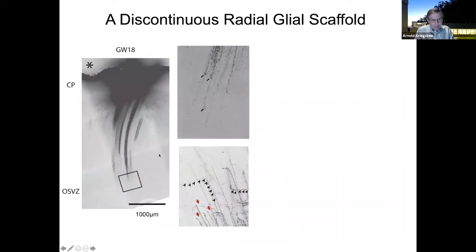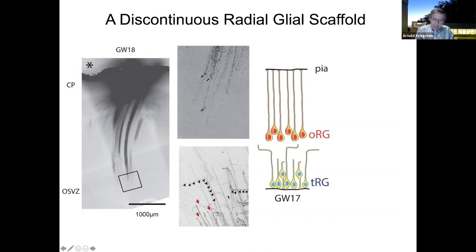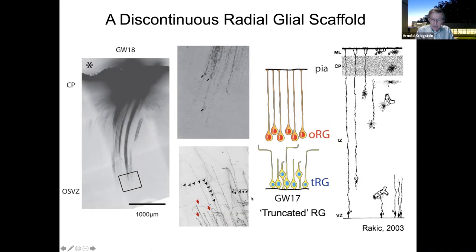In early stages the radial glia at the ventricle ran continuously up to the cortex, forming a continuous scaffold. But after a week or two — at gestational weeks 15 to 18 when lower cortical layers form and upper cortical neurogenesis begins — DiI crystals at the surface only labeled outer radial glial cells ending in the outer subventricular zone, while DiI crystals at the ventricle labeled ventricular fibers ending in the outer subventricular zone, with only a few reaching the cortical plate. This confirmed the discontinuous scaffold our marker expression suggested.